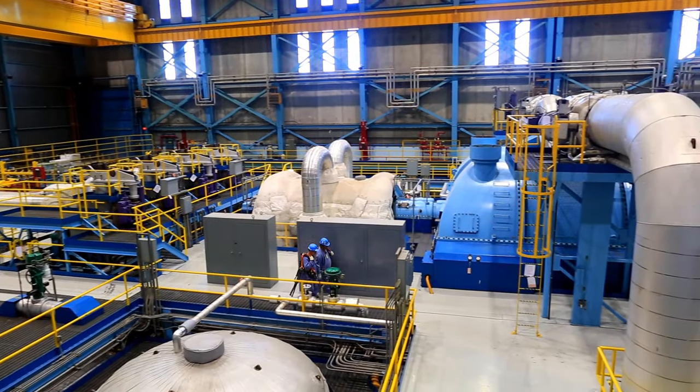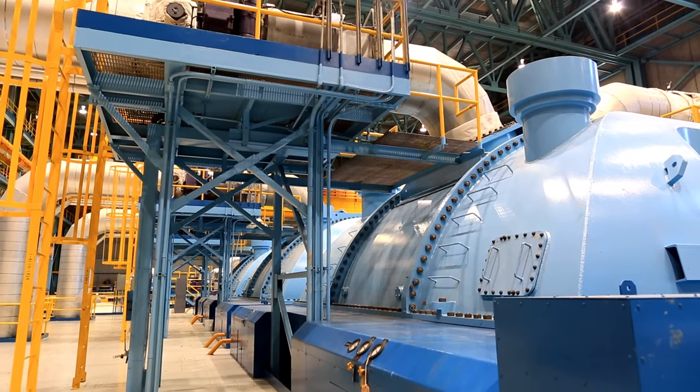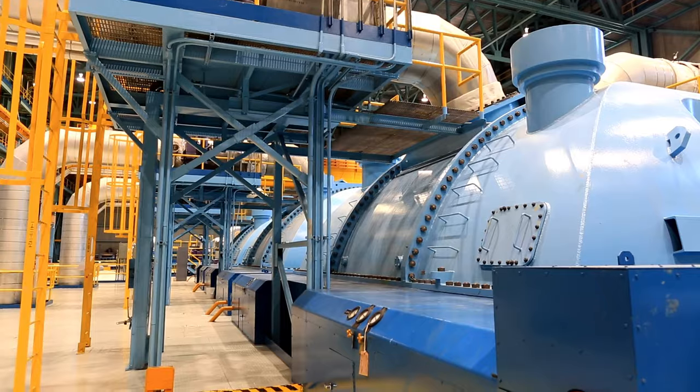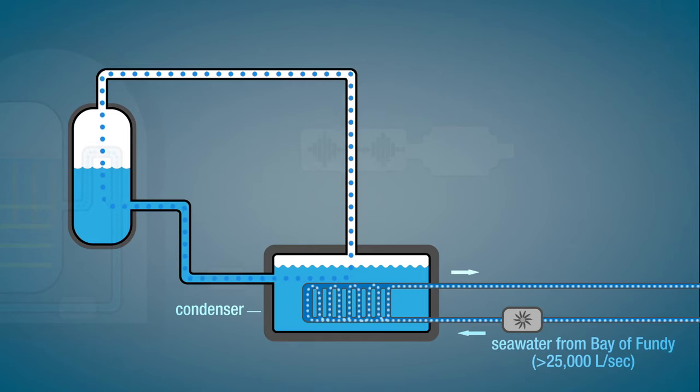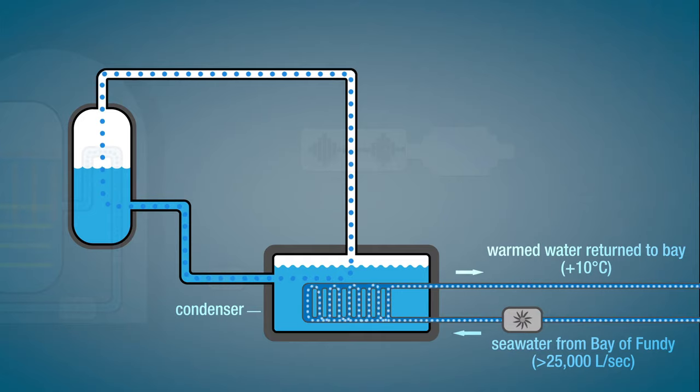To cool down the used steam, and to keep the reactor itself cool for safe operation, Lepreau uses over 25,000 litres of water every second from the Bay of Fundy. This seawater is warmed up about 10 degrees Celsius and sent back out into the bay.